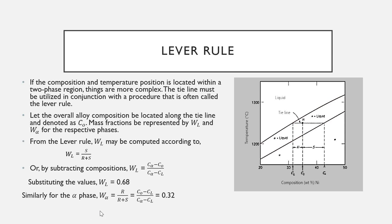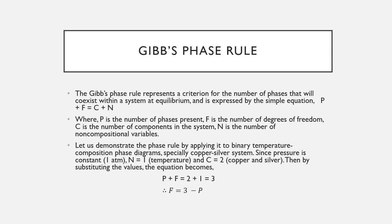Similarly, for the alpha phase: W_α = R/(R+S) = (C₀ − C_L)/(C_α − C_L). Substituting all values gives W_α = 0.32. Thus the lever rule may be employed to determine the relative amounts or fractions of phases in any two-phase region for a binary alloy, if the temperature and composition are known and equilibrium has been established. Next is the Gibbs phase rule.